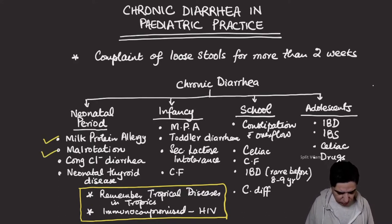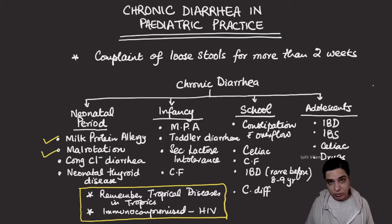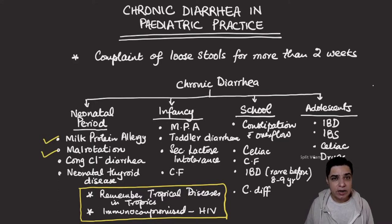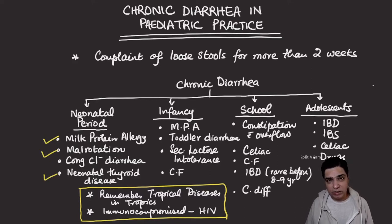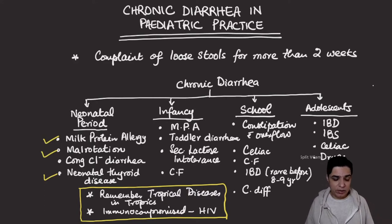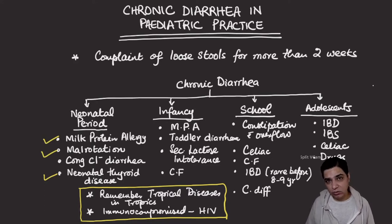Other rarer neonatal causes include incomplete malrotation of the gut, congenital chloride diarrhea, and congenital lactose intolerance — all quite uncommon in practice. Another relatively uncommon cause is neonatal thyroid disease: if a child is born with an overactive thyroid, one of the presentations could be continuous diarrhea lasting more than two weeks.